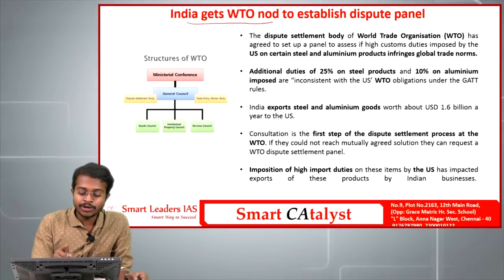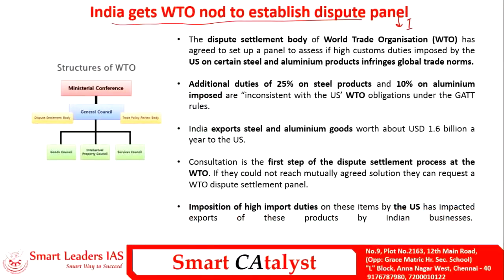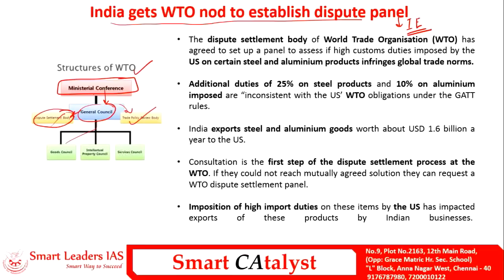The next article is India getting the WTO nod to establish a dispute panel, taken from The Indian Express. The WTO has a ministerial conference which discusses and debates trade relations and rules. This ministerial conference has a general council with a dispute settlement body. If there are trade distortions between countries, they approach this dispute settlement body, which creates a dispute panel and resolves arbitration through its verdict. Another organ is the trade policy review body; the general council is further divided into goods council, intellectual property council, and services council.